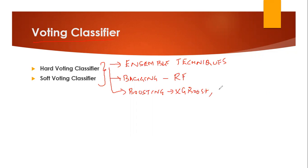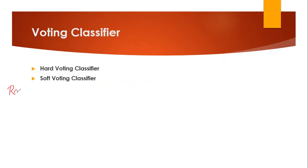My next video will actually be on something called AdaBoost. We'll be discussing about that in my next video, but we are focusing more on voting classifier. Now, in order to understand hard voting classifier and soft voting classifier, let me just take a very simple example. Suppose I am discussing about a random forest classifier.